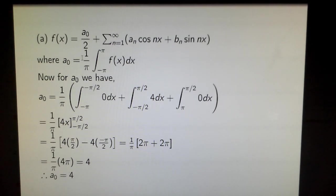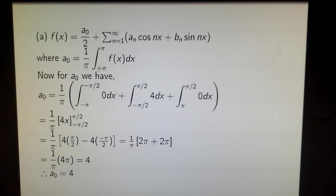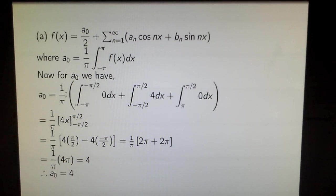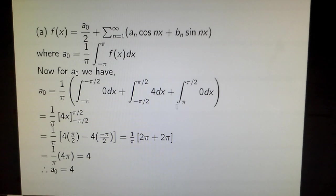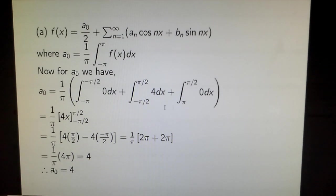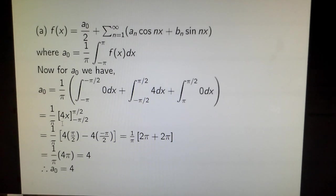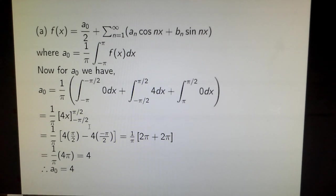To find a_0, we have a_0 = (1/π)∫f(x)dx. Remember that within this interval we have 0, within that interval we have 4, and within this interval we have 0. When we compute and integrate within the limits...